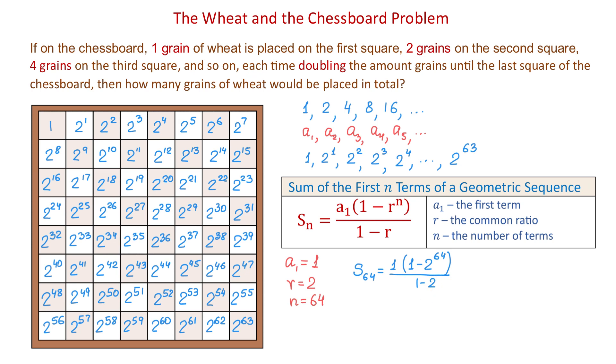So, here we have the number, and this is about 18 quintillion grains of wheat.